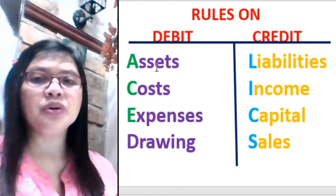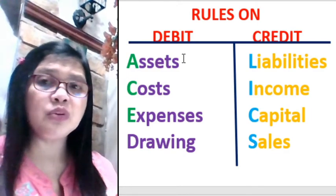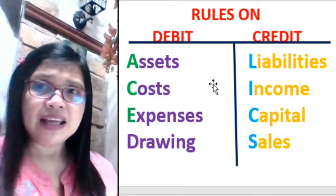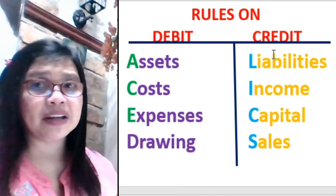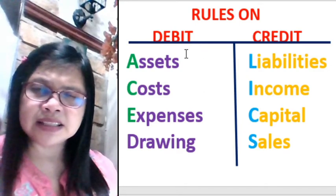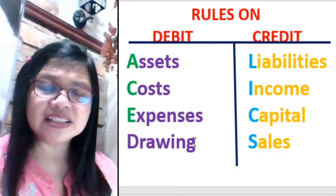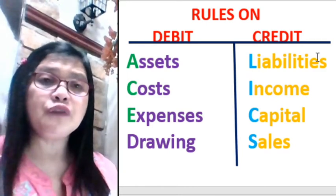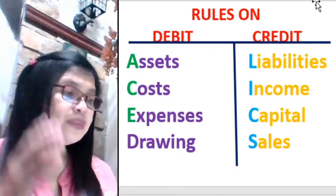Let me repeat the rule: assets, costs, expenses, and drawing have a normal debit balance. Liabilities, income, capital, and sales have a normal credit balance. To increase these accounts, you follow their normal balances. To decrease, you do the opposite. For example, to decrease your asset, since the normal balance is debit, you credit it. To decrease your liability, you debit it. To decrease income, you incur costs and expenses. To decrease capital, you incur drawing.